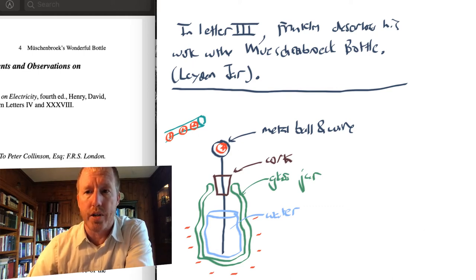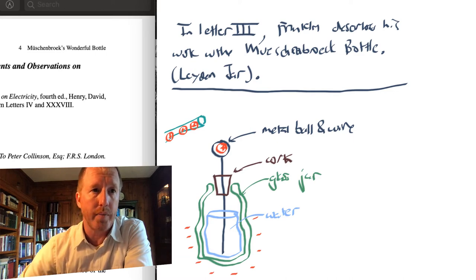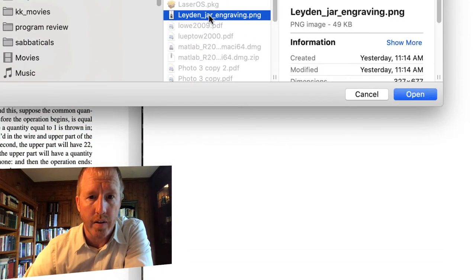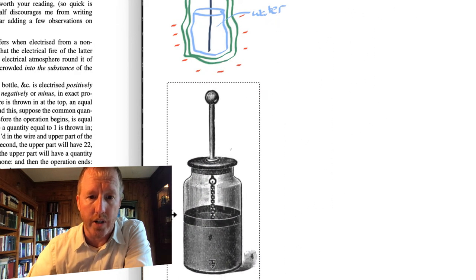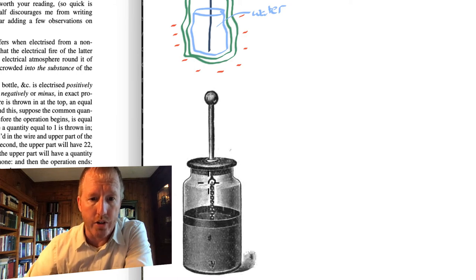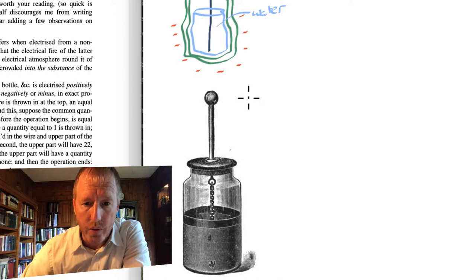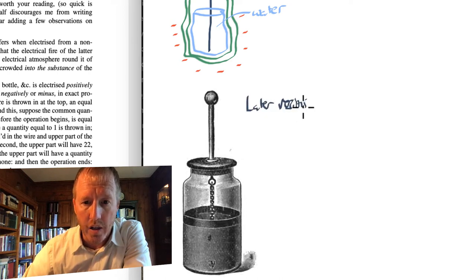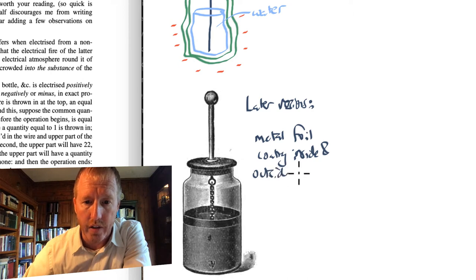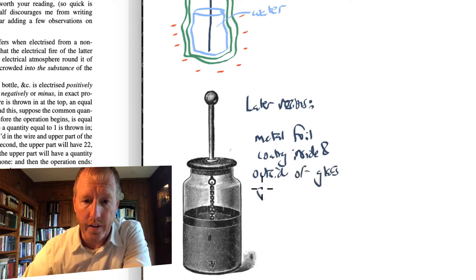It would be worthwhile at this point to mention that there are later versions of this jar that Benjamin Franklin studies. So let me import a picture that illustrates a later image of this jar. This is a later version of the jar. How this differs is that one has, once again, this metal rod passing down through it. There's a chain that's hanging down onto the inside, and the chain is in contact with a metal foil that coats the inside of the glass. There's also a metal foil coating outside of the glass, and also there is no water. So in later versions, there is metal foil coating the inside and outside of the glass, and there is no water.